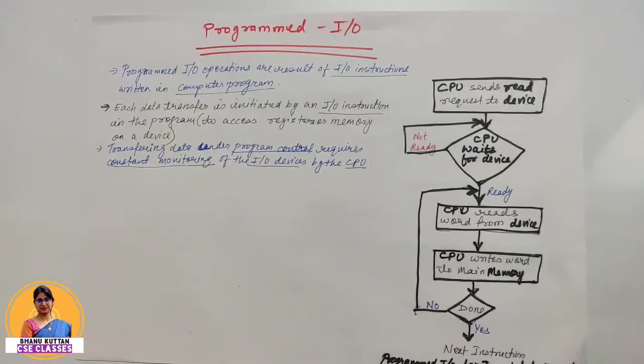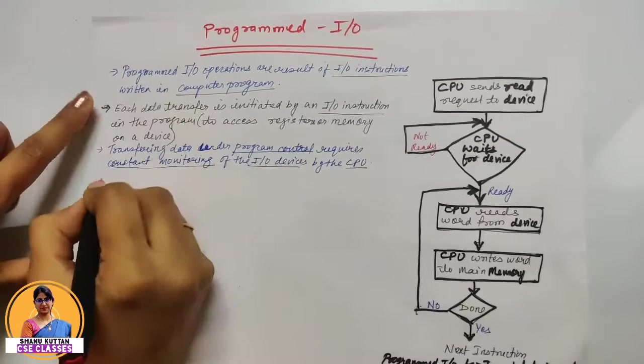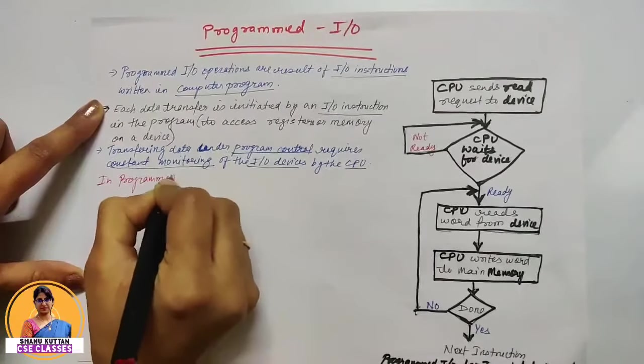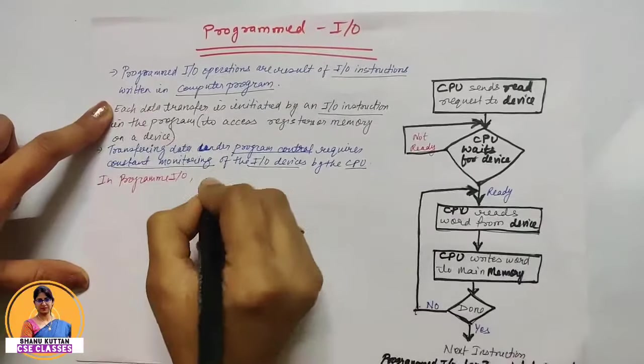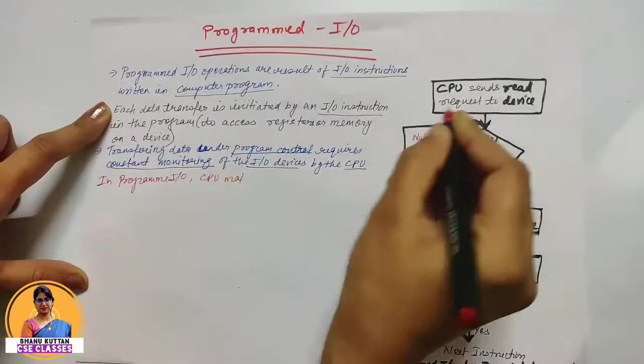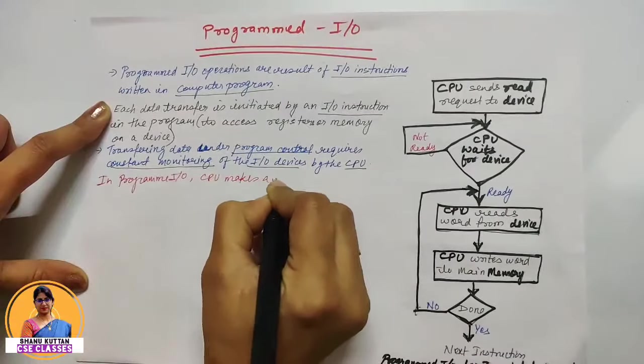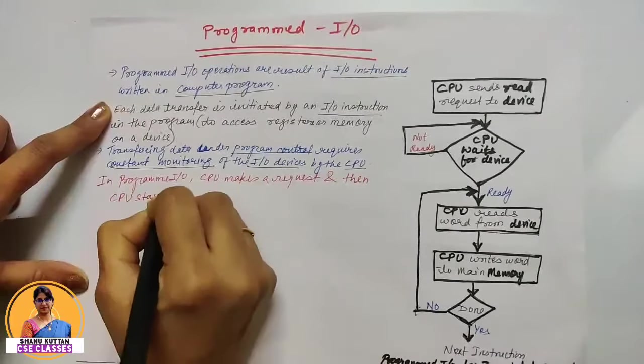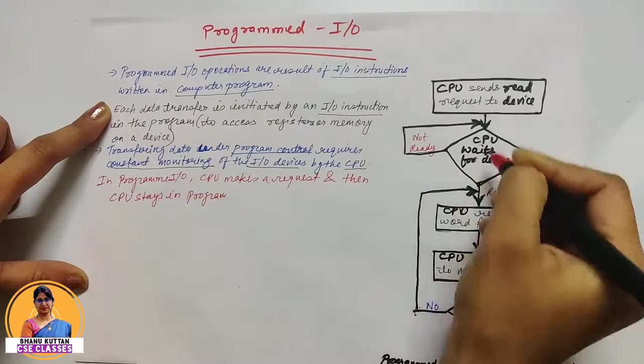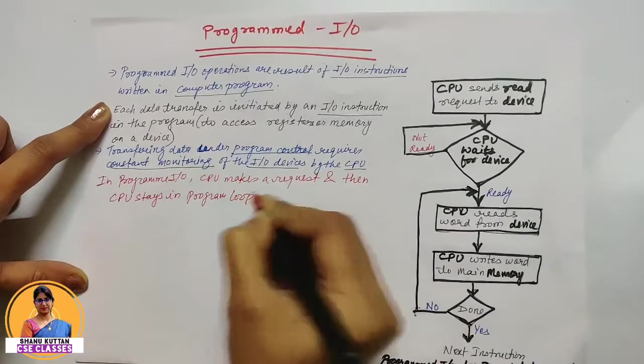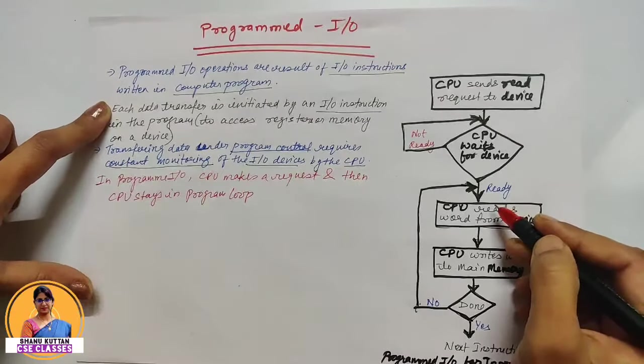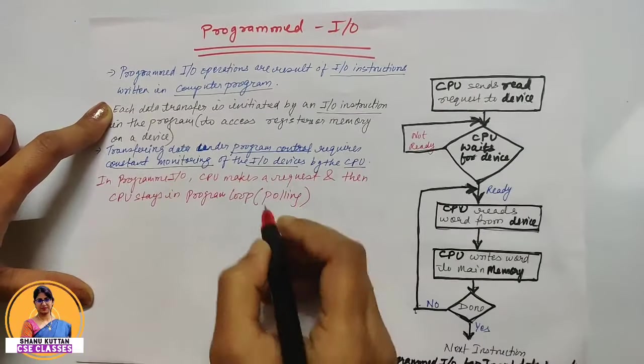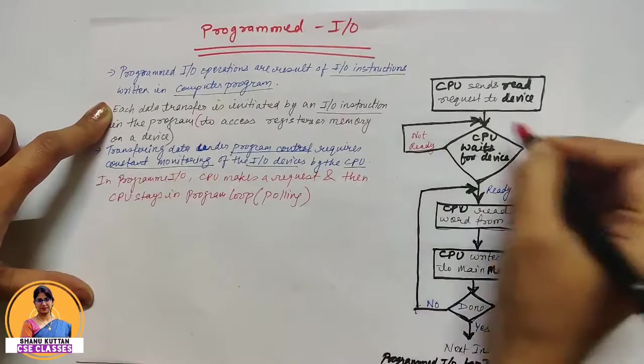So hum yeh keh sakte hai ki in programmed I/O kya hota hai. In programmed I/O this is a main important point: CPU makes a request, CPU sab se pehle request karega and then CPU stays in program loop. Ek baar request karne ke baad CPU kya hai program loop mein aa gaya, continuously uska status check karega. Is program loop ko hum kehate hai polling. Polling kahenge is method ko, this method is called polling.